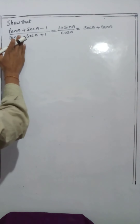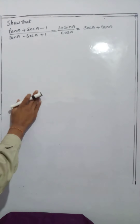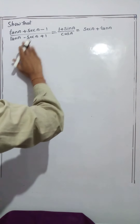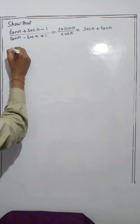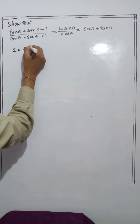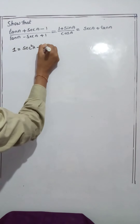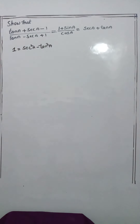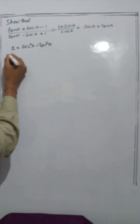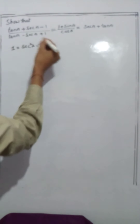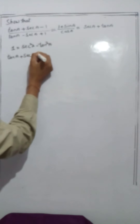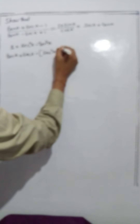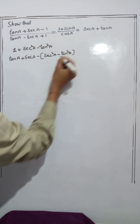We don't need any transformation to sin a and cos a because these are the same. Now, the general thing is you have the formula: 1 = sec²a - tan²a. In the numerator, replace 1 by sec²a - tan²a.